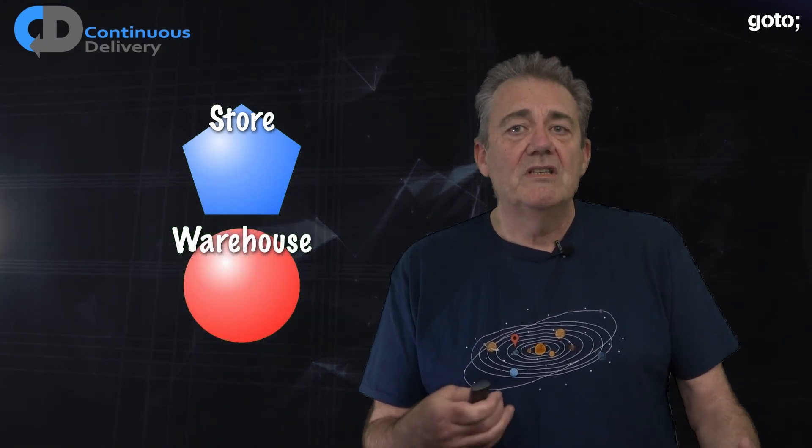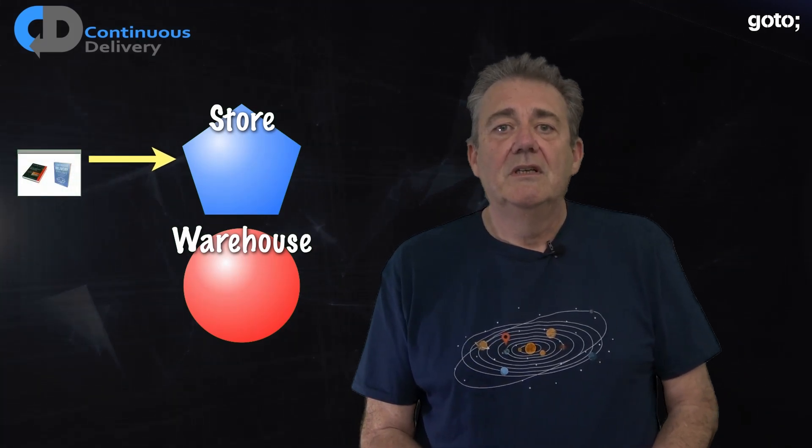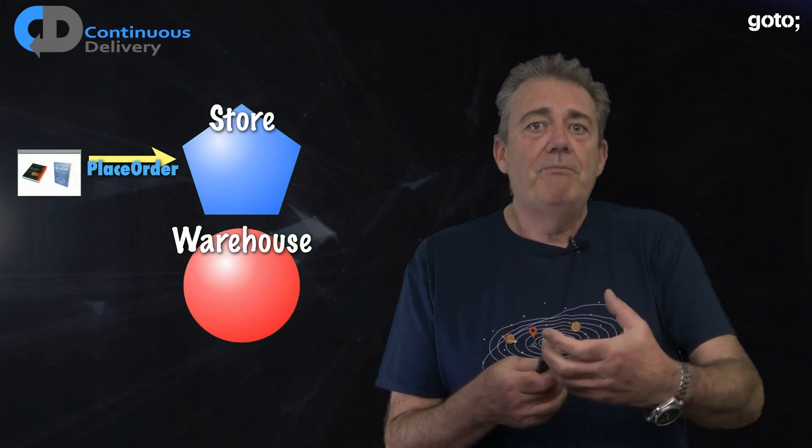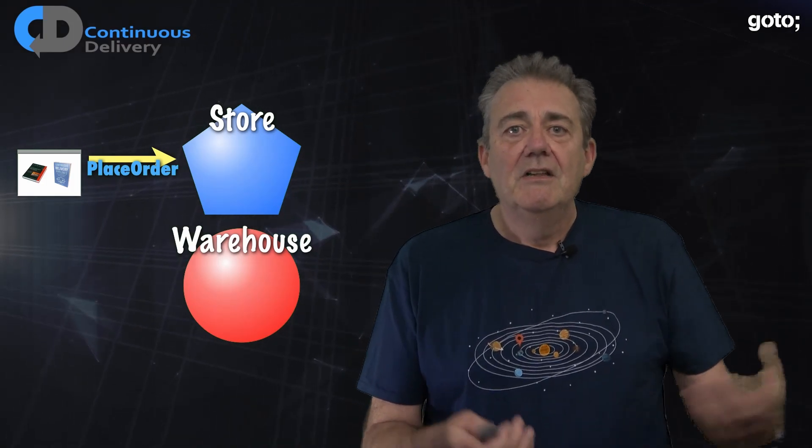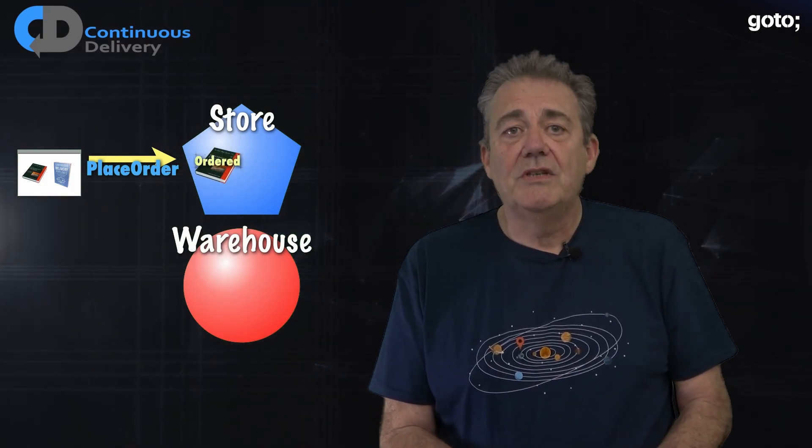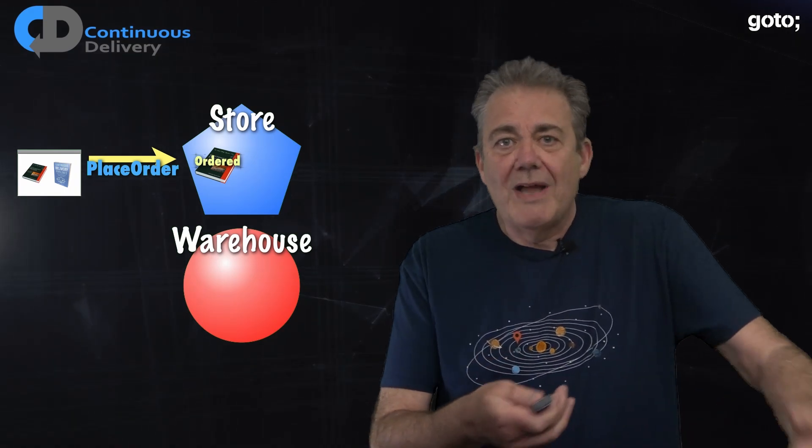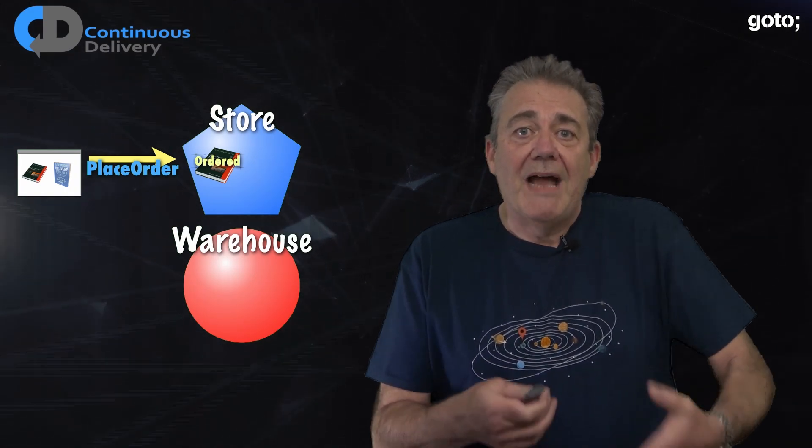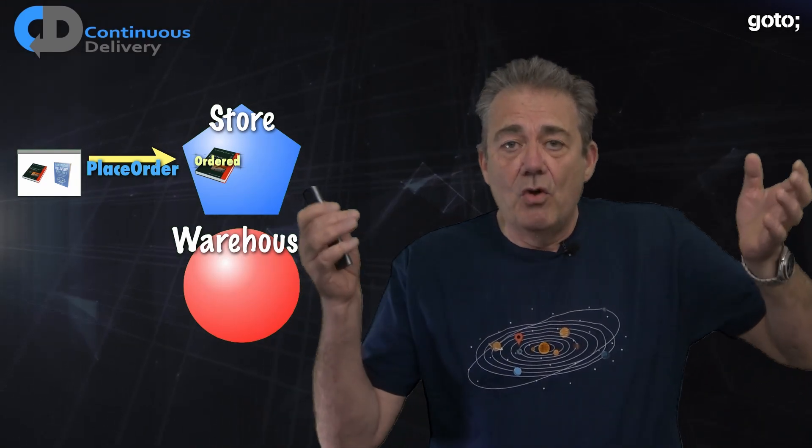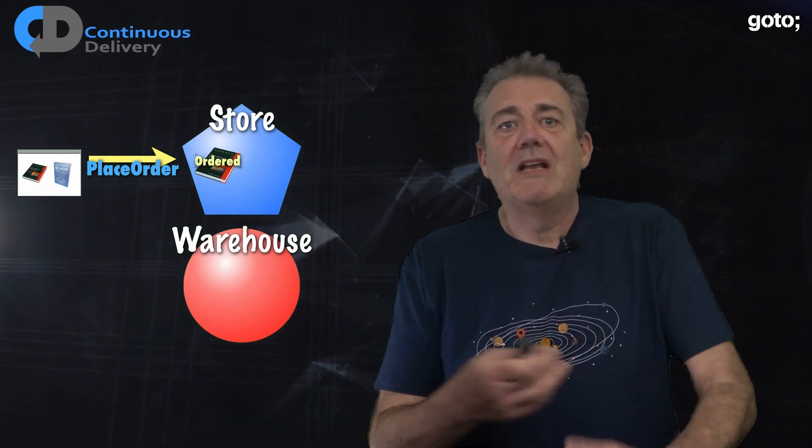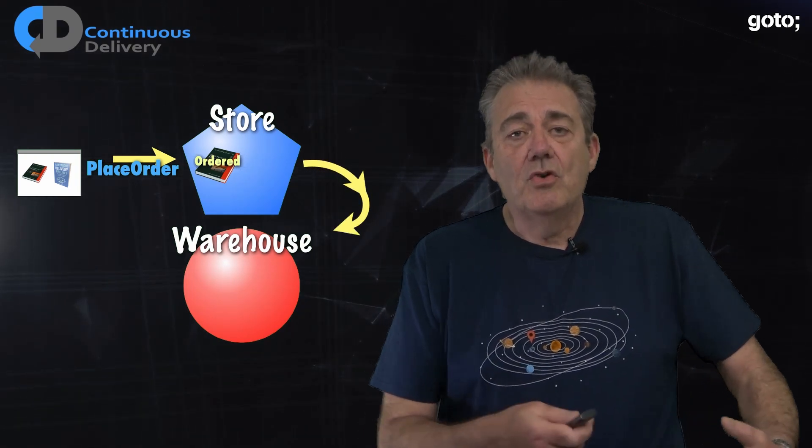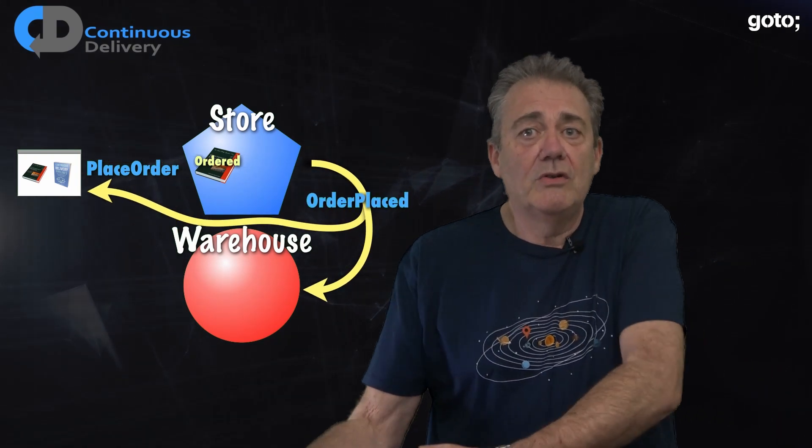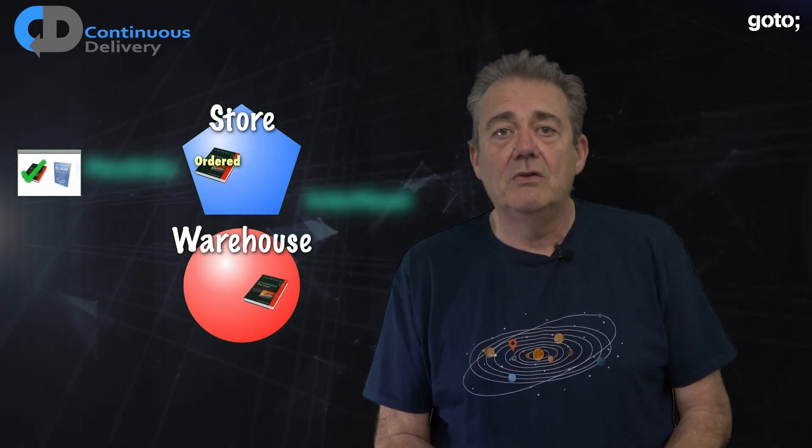Let's be more specific. Let's imagine that we're building a bookstore out of these little black boxes and our store consists of two of these boxes, the store and the warehouse. We place an order for a book called continuous delivery. The store updates its state to capture that order, maybe creating an order record of some kind internally, perhaps initialized with the state of ordered and including relevant details of the order. Then the store publishes a message saying order placed, including any relevant details of the order.